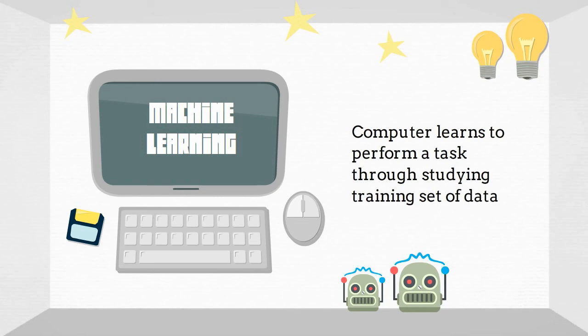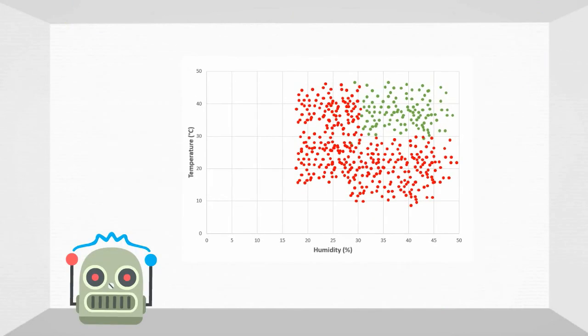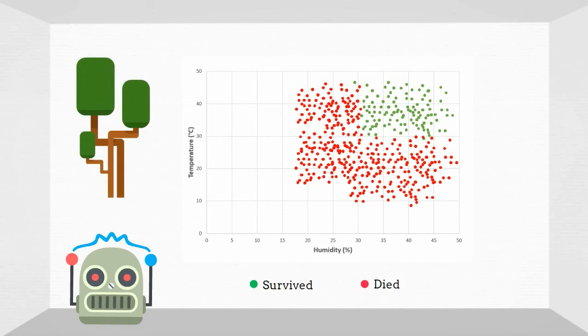Let's say a plant only grows under certain humidity and temperature. The dots represent different plants, or the training set. The green ones survived and the red ones didn't.